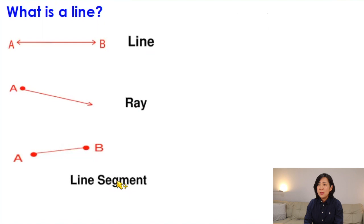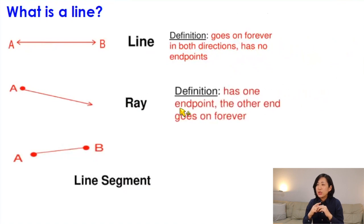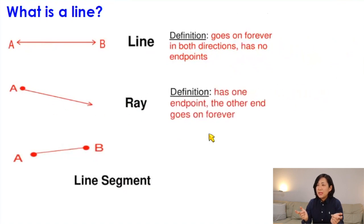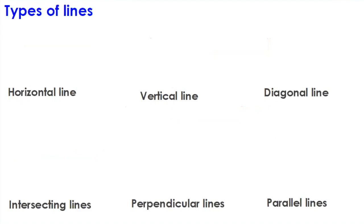Do you know all the differences between them? The definition of a line is it goes forever in both directions and has no ending point. A ray has one end point and the other end goes on forever. A line segment is a piece of a line that has two ending points, just connecting two different points together.